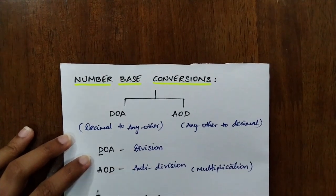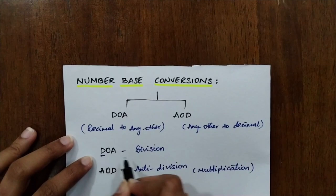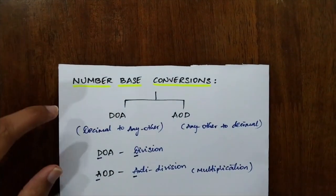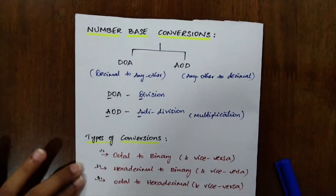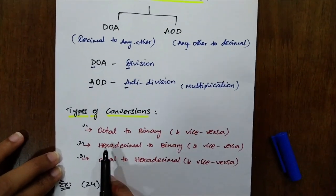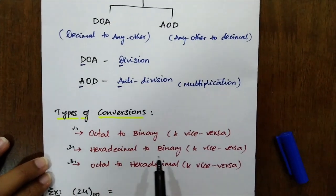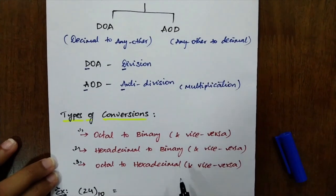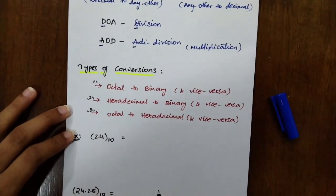I want you to really remember what is DOA and AOD. DOA stands for division - the starting D stands for division. In AOD, A stands for anti-division. Please just try remembering these two values for all the problems. Now coming back to conversions, what are the broad categories of these conversions? It can be summed up as octal to binary and vice versa like binary to octal, hexadecimal to binary or binary to hexadecimal, octal to hexadecimal or hexadecimal to octal. Let's get into the examples so you will be having a very clear idea.